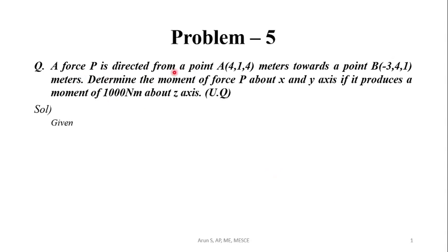A force P is directed from a point A (4, 1, 4) meters towards a point B (-3, 4, 1) meters. Determine the moment of the force P about the X and Y axes if it produces a moment of 1000 Nm about the Z axis.